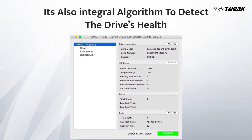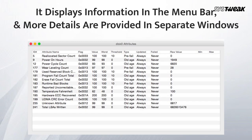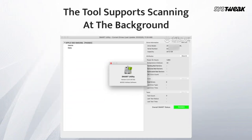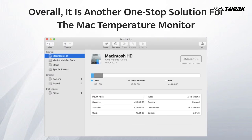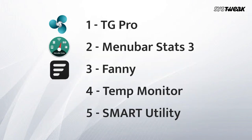Number five: Smart Utility. This tool not only indicates individual attributes of information but also uses an internal algorithm to detect the drive's health. It displays information in the menu bar with more details provided in separate windows, making it another one-stop solution for Mac temperature monitoring.